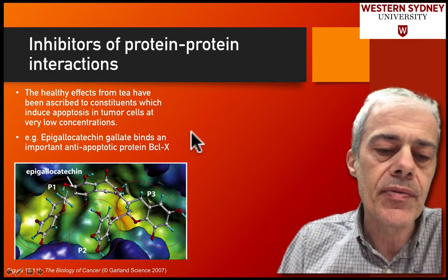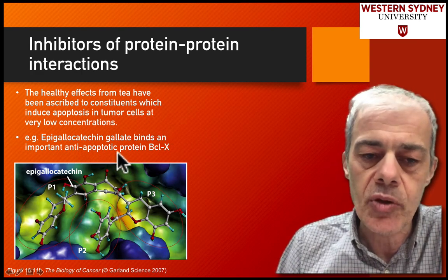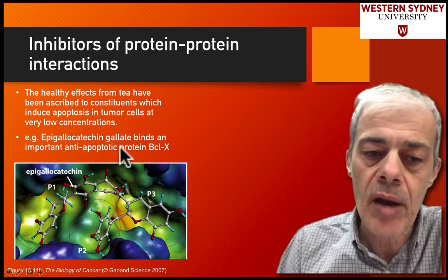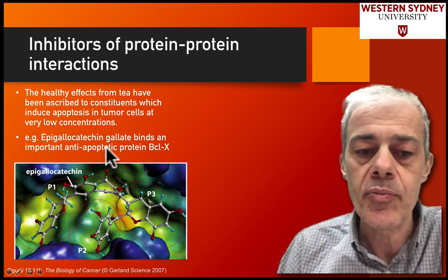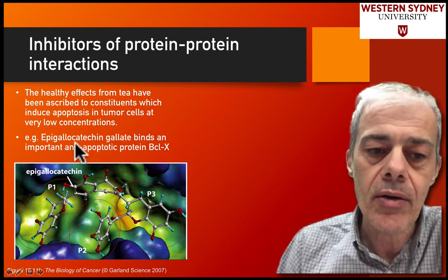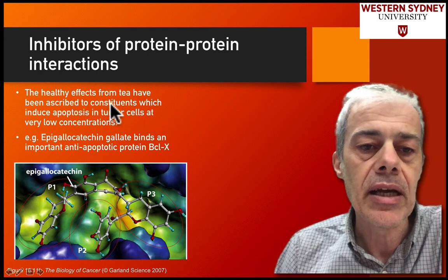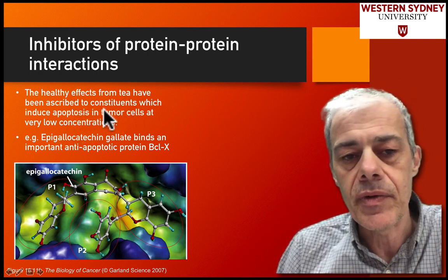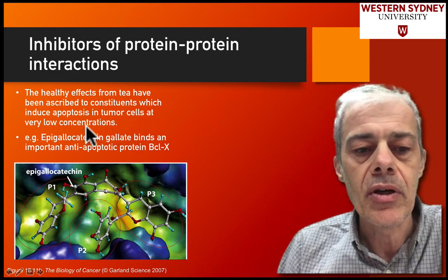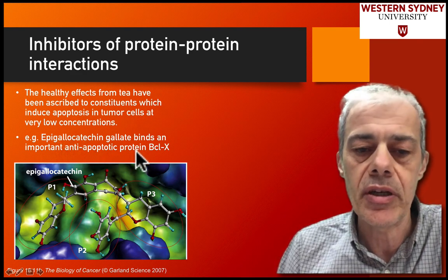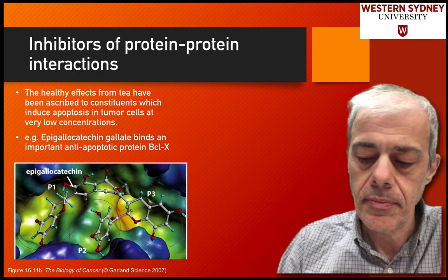Another example involves knocking out the function of an anti-apoptotic protein. Pro-apoptotic signals drive cells toward programmed cell death, while anti-apoptotic proteins stop that process. If you knock out the anti-apoptotic factor, you can allow apoptosis to proceed. It turns out that tea contains a compound which, at low doses, can knock out one of these anti-apoptotic proteins and therefore allow apoptosis to occur — suggesting that a cup of tea may indeed be good for you.